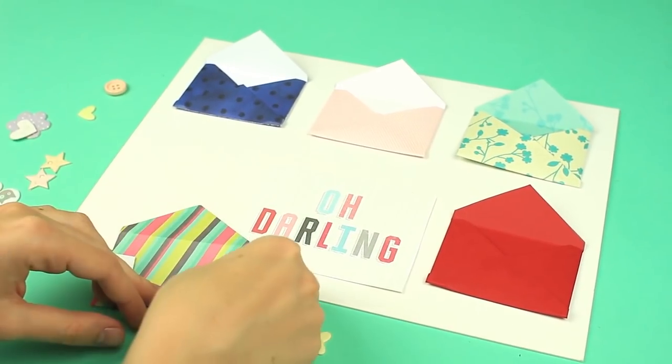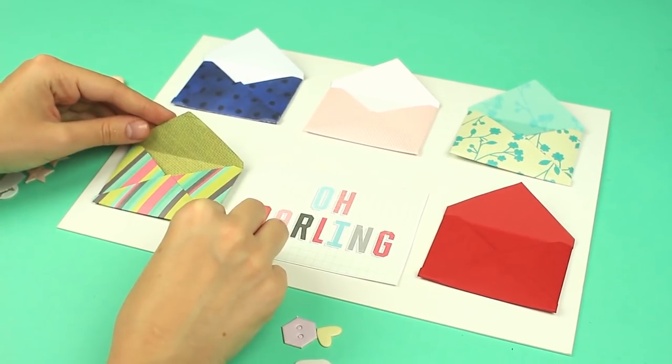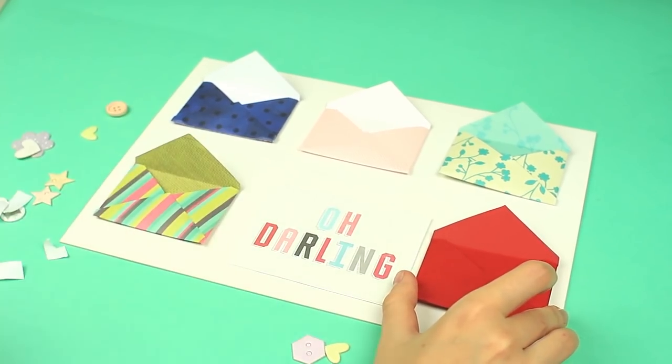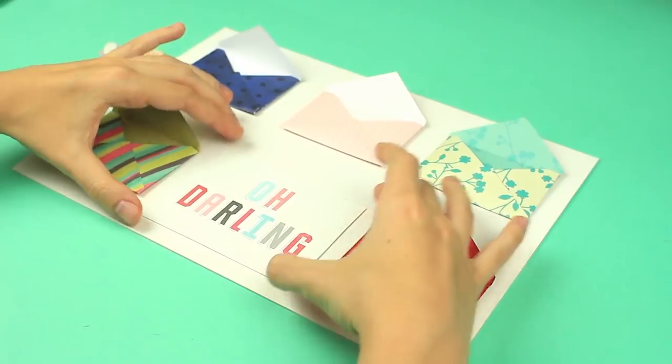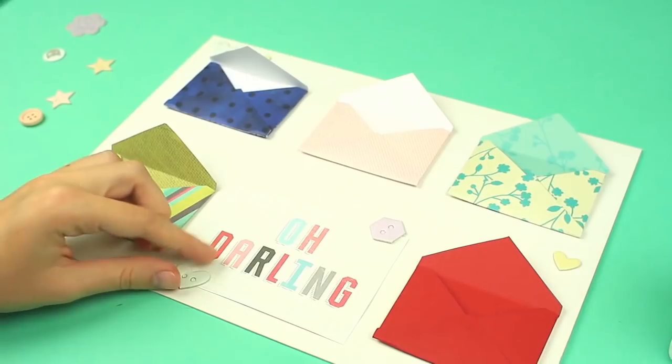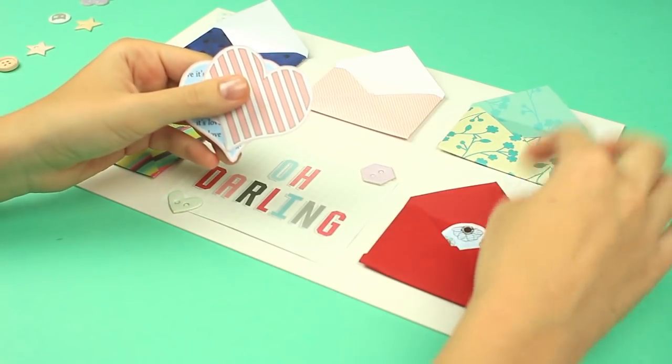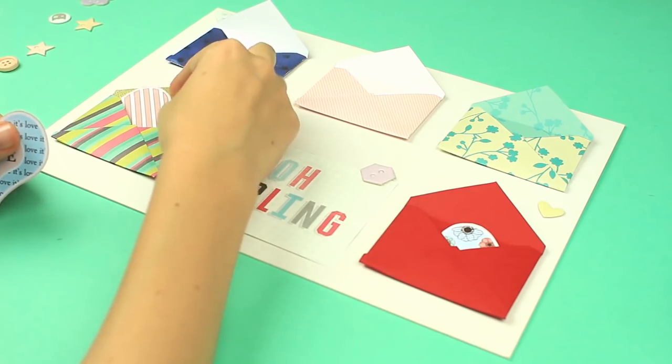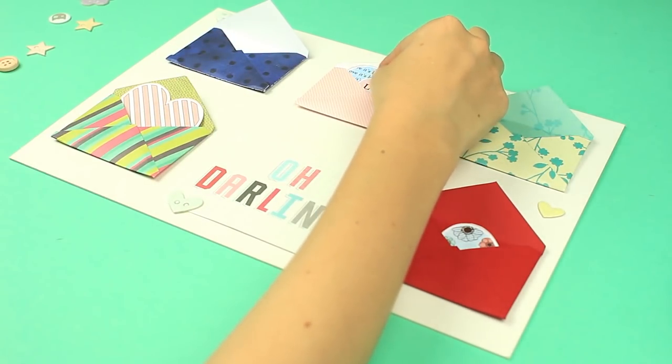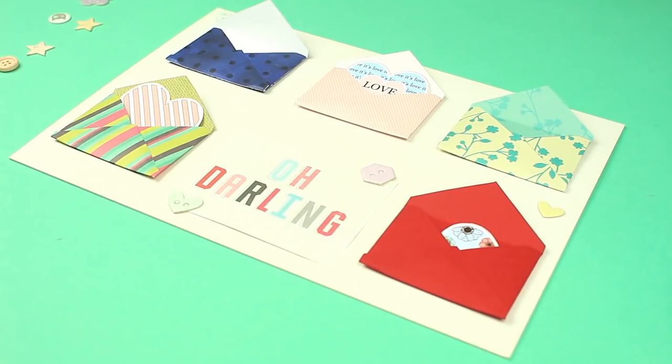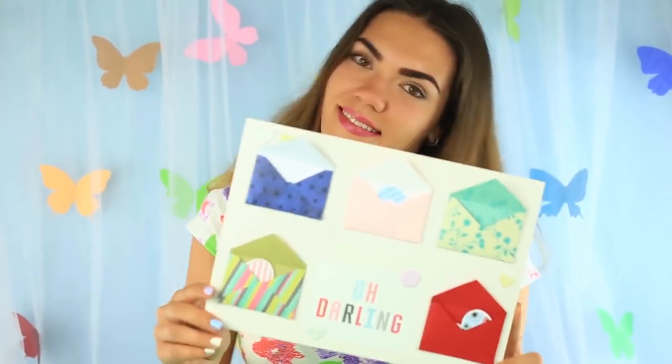Attach the envelopes with double-sided foam tape. Use the white glue to attach a tag. Add some embellishments. Put heart-shaped tags inside the envelopes. This card is the best solution if you want to make a birthday card together with your friends or family members. Everyone can write a wish on a tag and put it into a separate envelope.